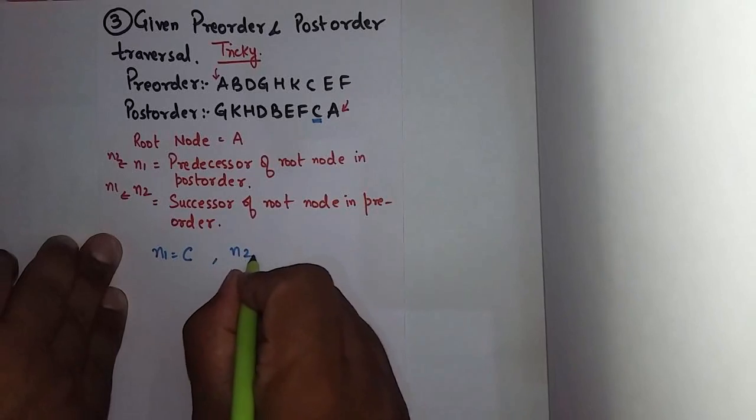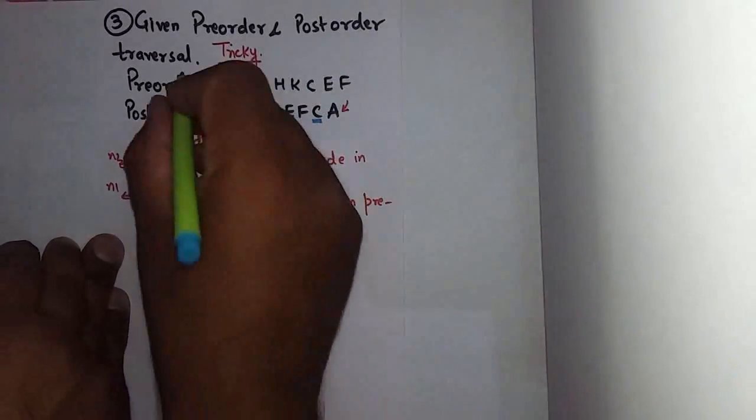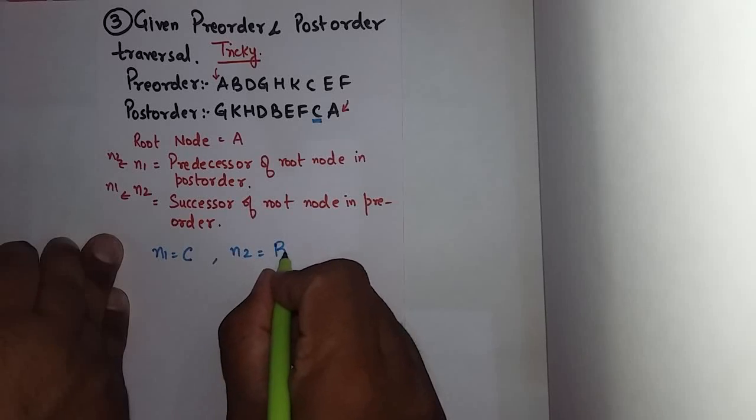and N2 will be successor of root node in pre-order, that will be B.